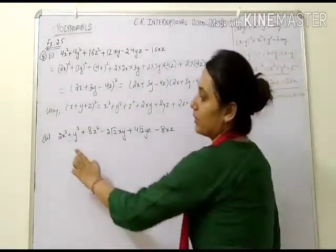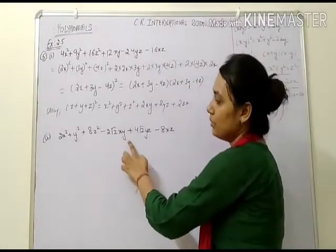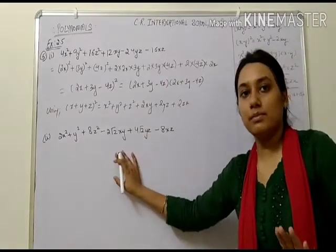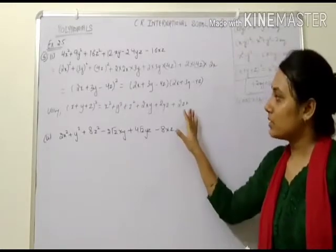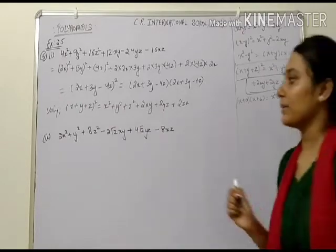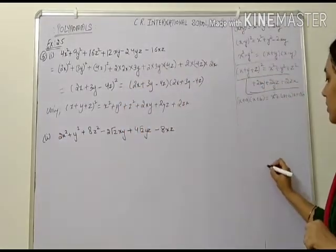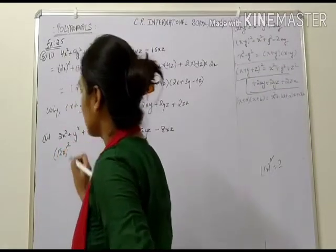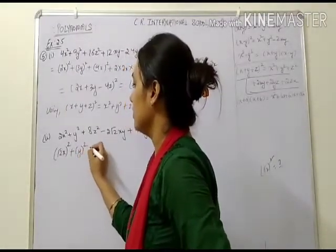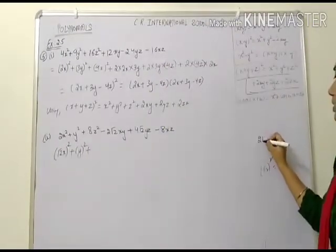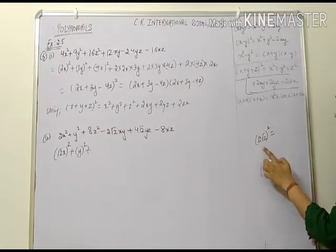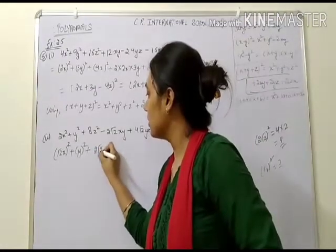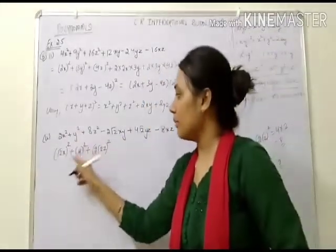Second question: 2x square plus y square plus 8z square minus 2 root 2 xy plus 4 root 2 yz minus 8xz. Number of terms is 6, so the same identity applies. To apply it, we first convert each squared term into a whole square form. 2x square equals root 2x whole square. y square equals y whole square. 8z square: since 2 root 2 whole square equals 4 times 2 equals 8, so 8z square equals 2 root 2 z whole square.